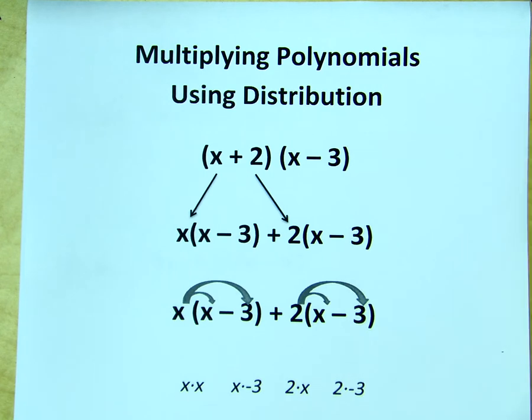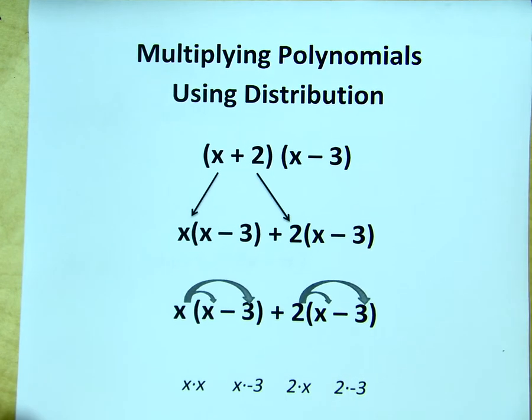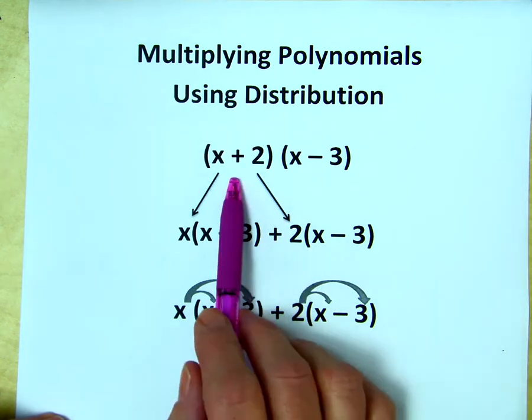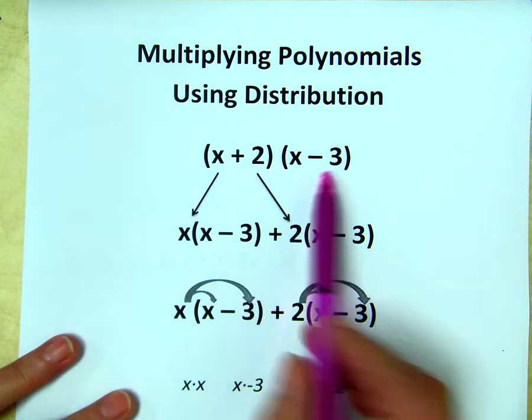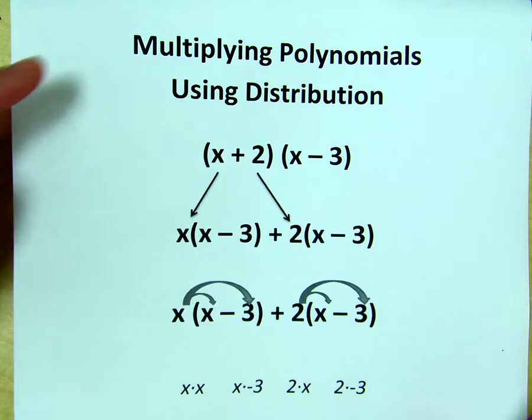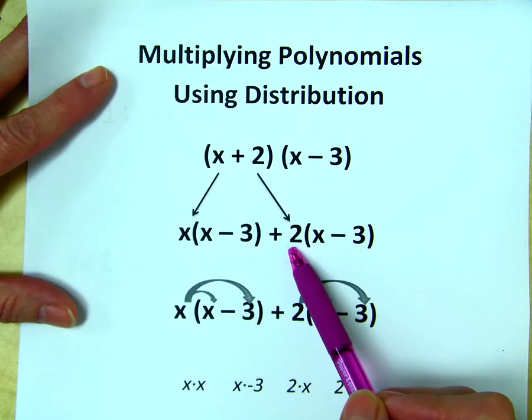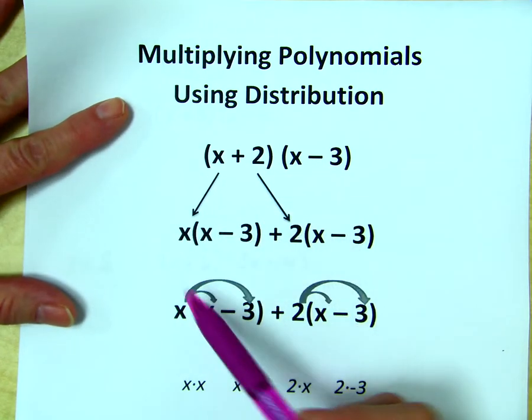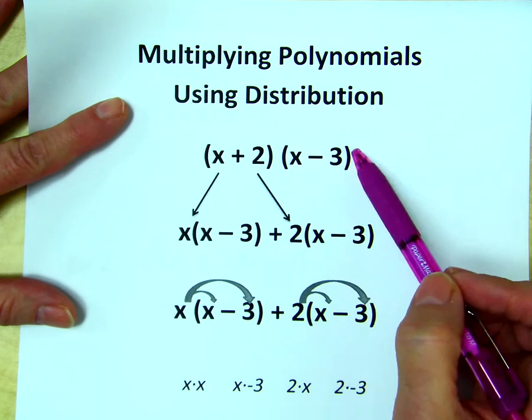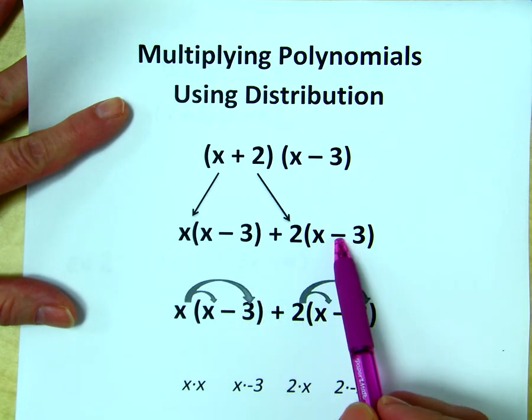We have an example here. You will be given a copy of this for your notebook. As you can see, we have two binomials being multiplied together. The process for multiplying these is to take the first binomial and split it into its two terms, the x and the positive 2, and then multiply each of those terms by the second binomial, the x minus 3.